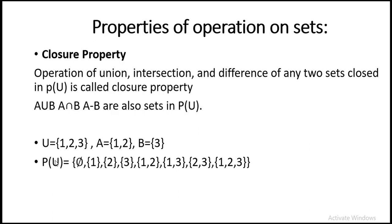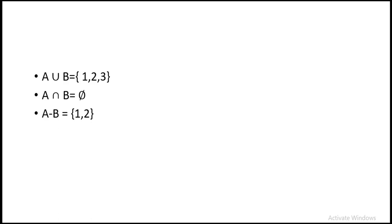We saw that the operations applied on subsets A and B — the answers we got — are present in the power set of the universal set. A union B is {1,2,3}, A intersection B is the empty set, A minus B is {1,2}, and B minus A is {3}. All these answers are present in the power set of the universal set. This is the closure property.